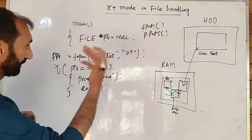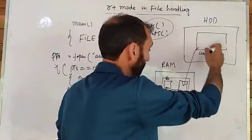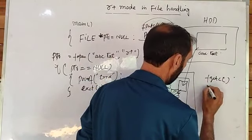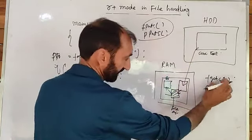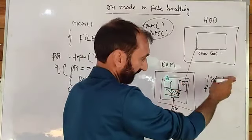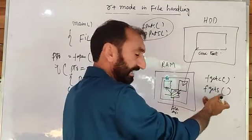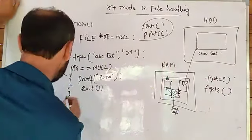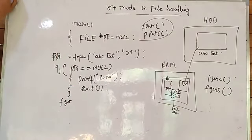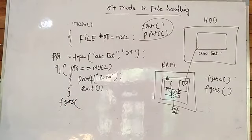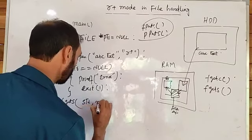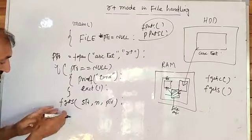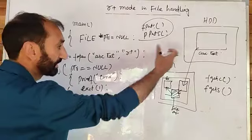And if we want to read the contents of the file, we can use fgetc and fgets — those functions we have already discussed in R mode. fgetc reads a single character from the file, and fgets is used for reading a string from the file. For example, if we want to read a string, we use fgets, and we pass: first the string name, then how many characters we want to read at a time, and then the pointer PTR.